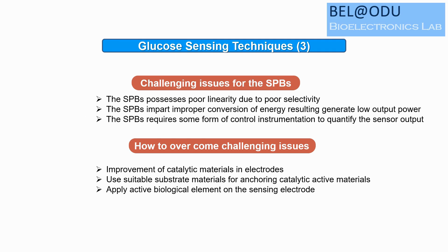Advantages of the self-powered biosensor (SPB) include simple configuration, no requirement of an external power source, and easy miniaturization and fabrication. Challenging issues include low power output due to poor energy conversion, and the need for a control instrument to quantify sensor output. Solutions include improvement of catalytic materials, suitable substrate materials, active biological elements on the sensing electrode, and optimized electrode performance.